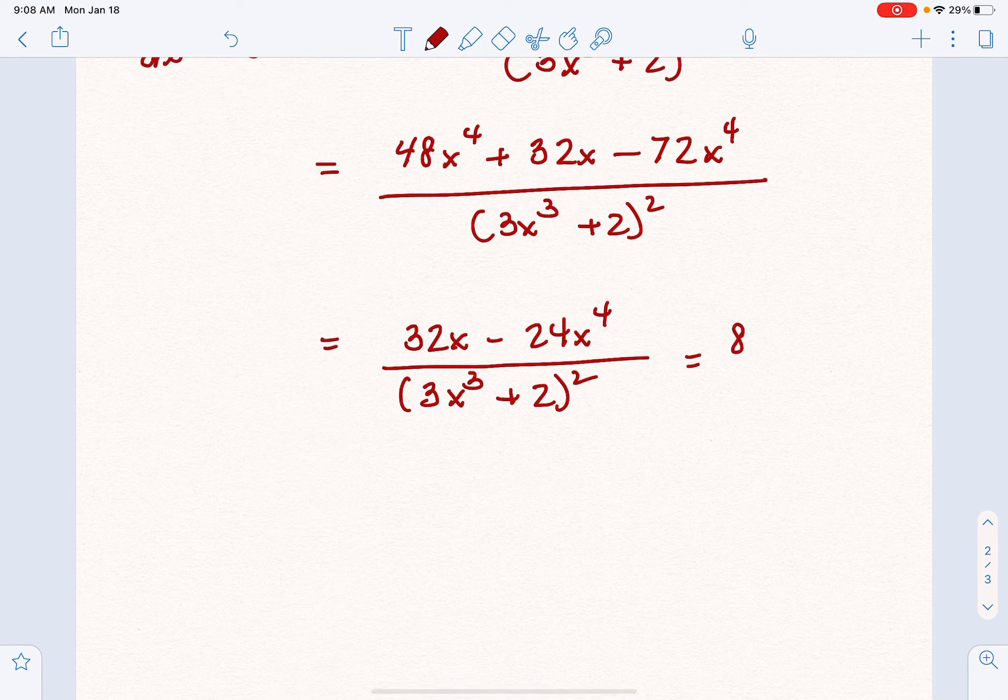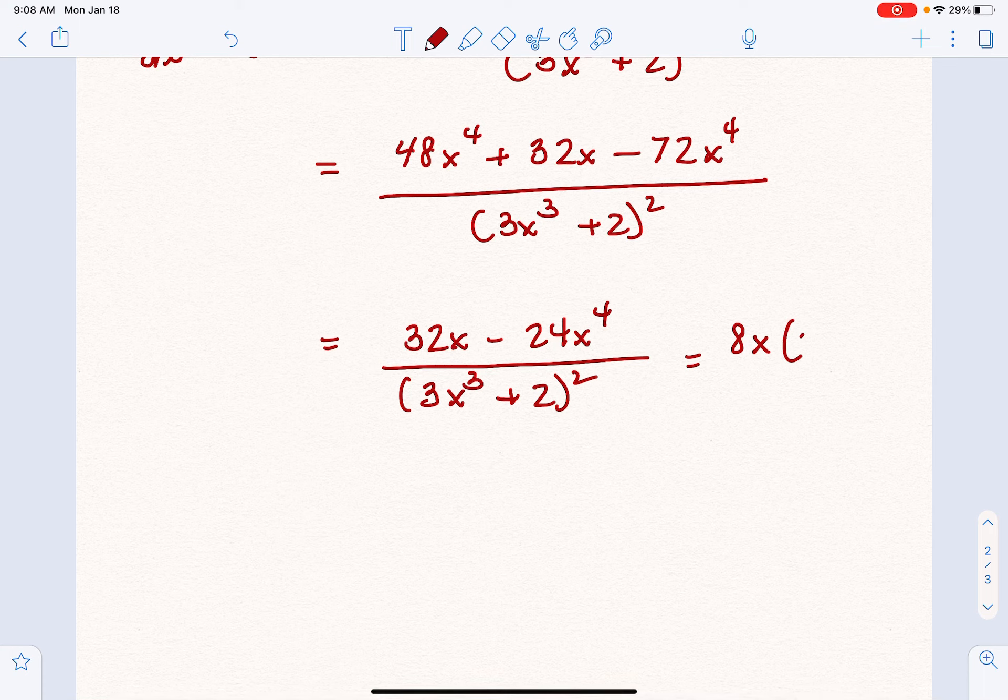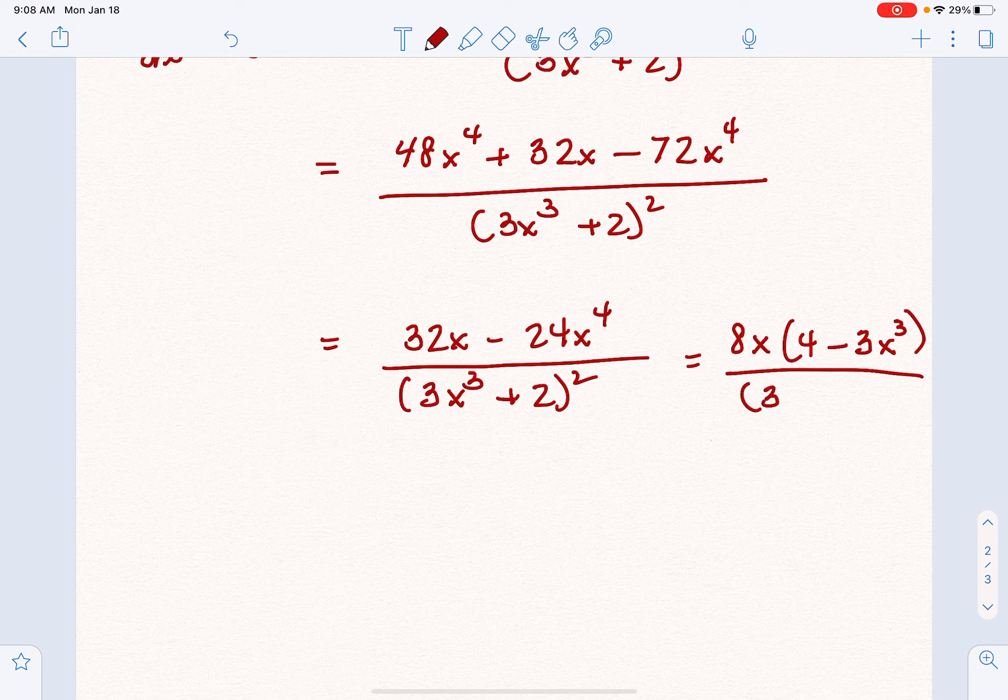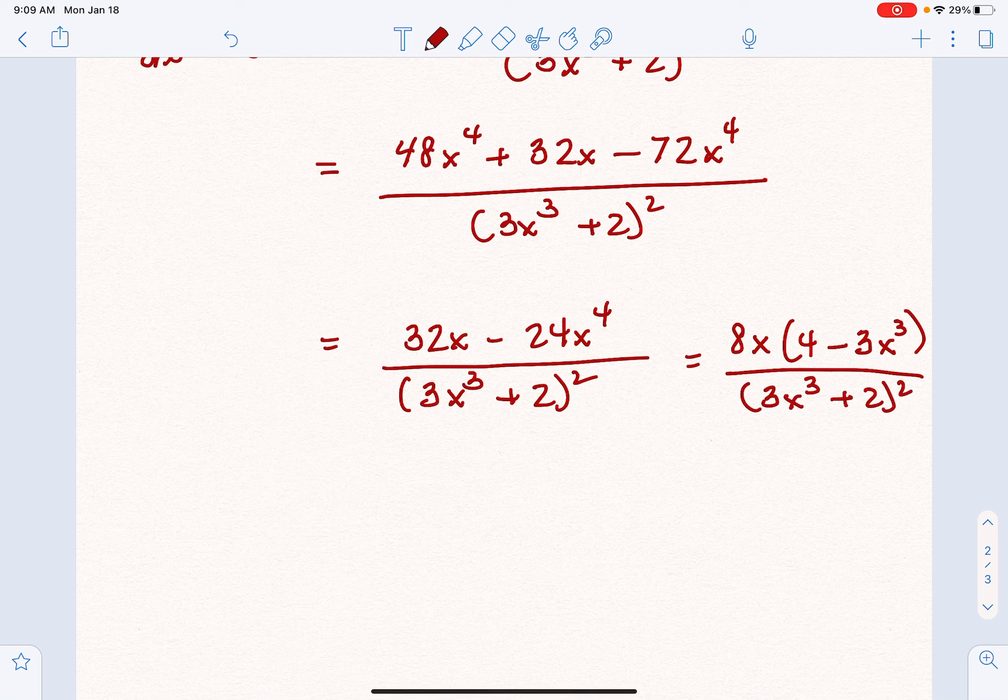I am going to factor out an 8x because that is a common factor. We're going to be left with 8x(4 - 3x³) all over—and again, we didn't touch the denominator, it's already in factored form. So that means we keep that the same. Either one of these two for now would be an acceptable answer. Just realize that later we're going to be wanting to factor, so factoring is something to practice.